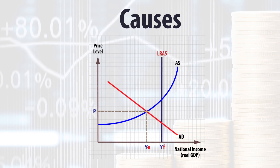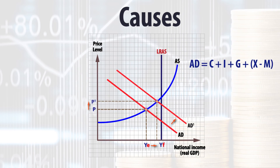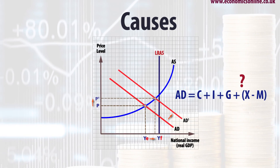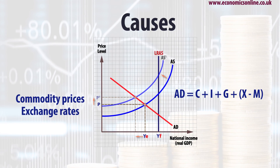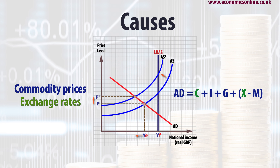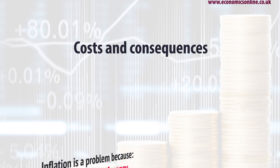Is inflation caused by excessive domestic aggregate demand? If so, by which component? Or is it caused by an increase in global commodity prices, or a fall in the exchange rate? Could it be caused by several factors occurring simultaneously? Is the cause predictable or the result of an unexpected shock? Next, identify the major costs and consequences associated with the problem. These might be significant and difficult to deal with, or they may be temporary and self-correcting.